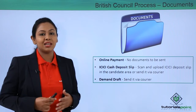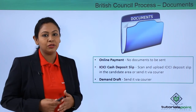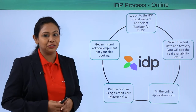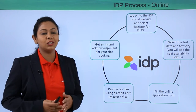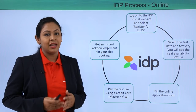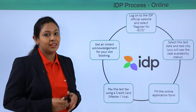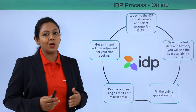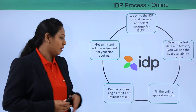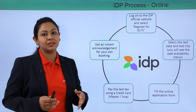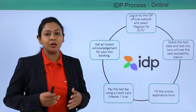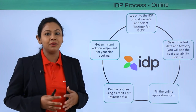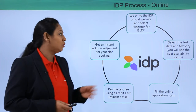Now let's have a look at the IDP online procedure. You will have to go to the official IDP website and select 'Register for IELTS.' Then select the city and date of your choice and fill out the online application form. After this, you will have to pay using a credit card — this is the catch for the IDP online procedure: you can pay only using a Mastercard or Visa card. You will get an instant acknowledgement for the seat you have booked.